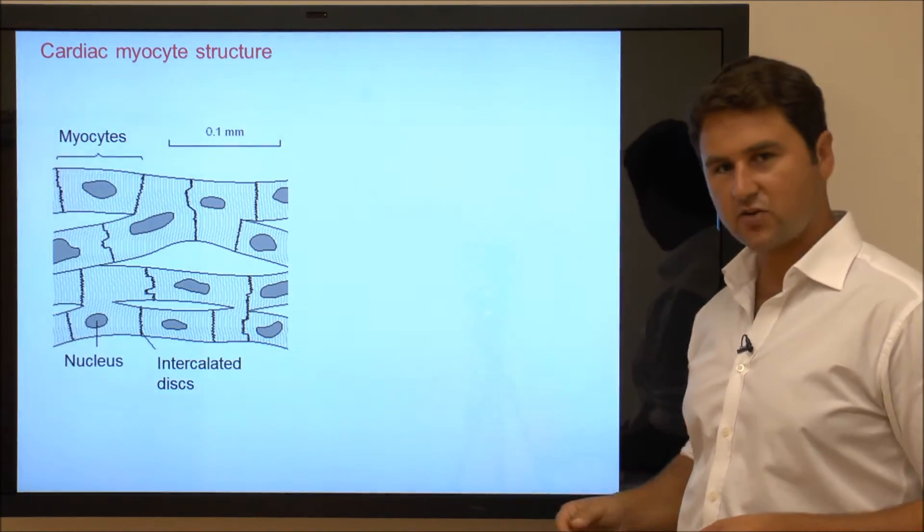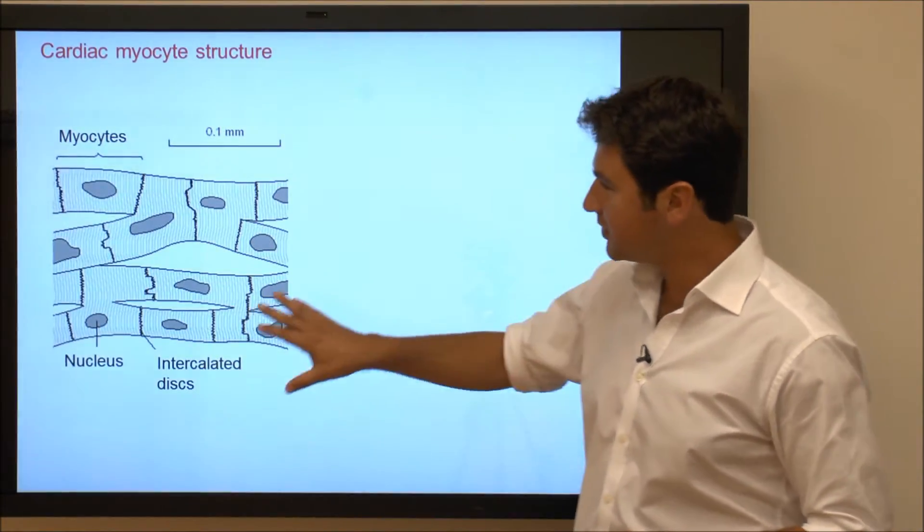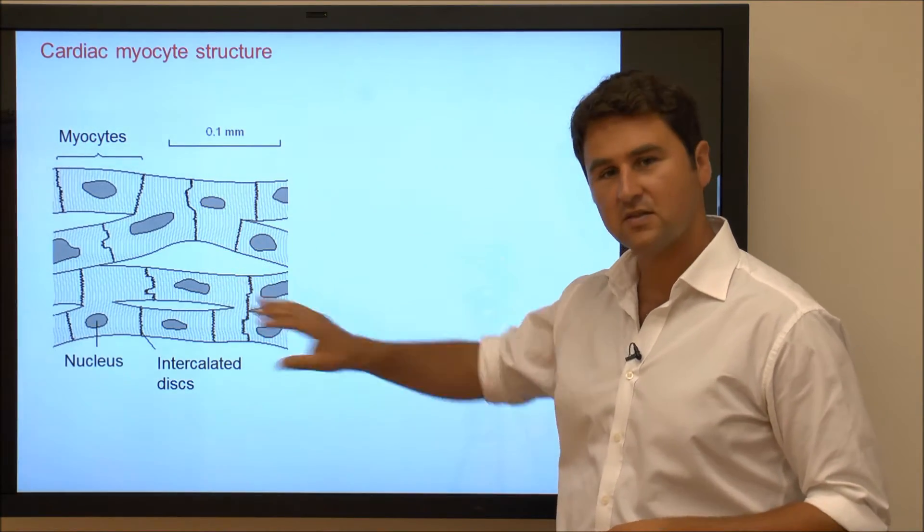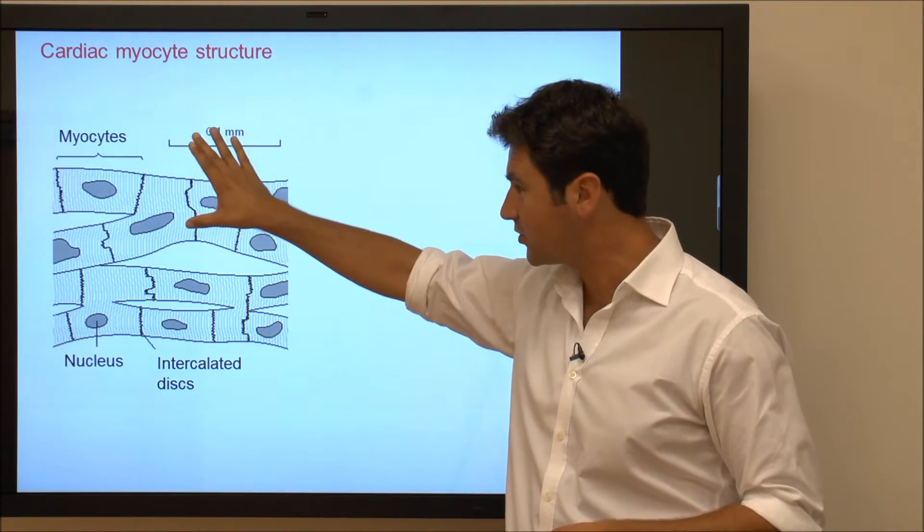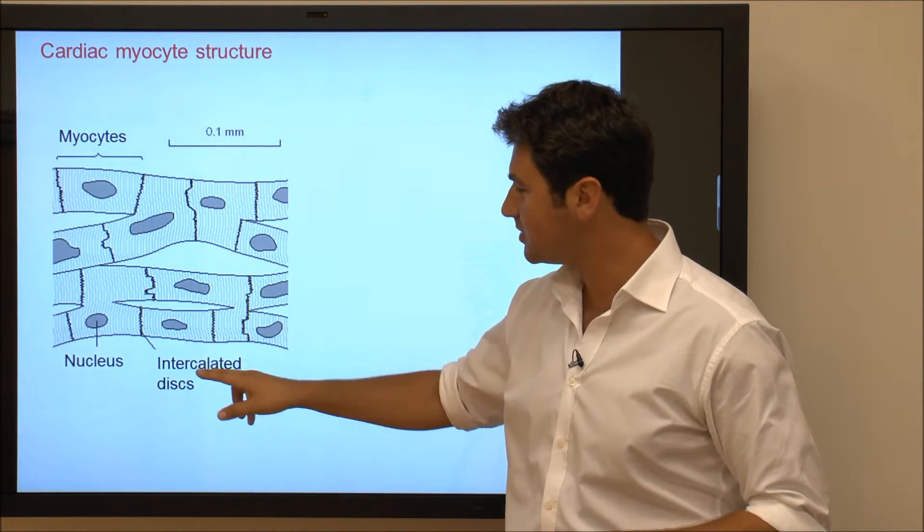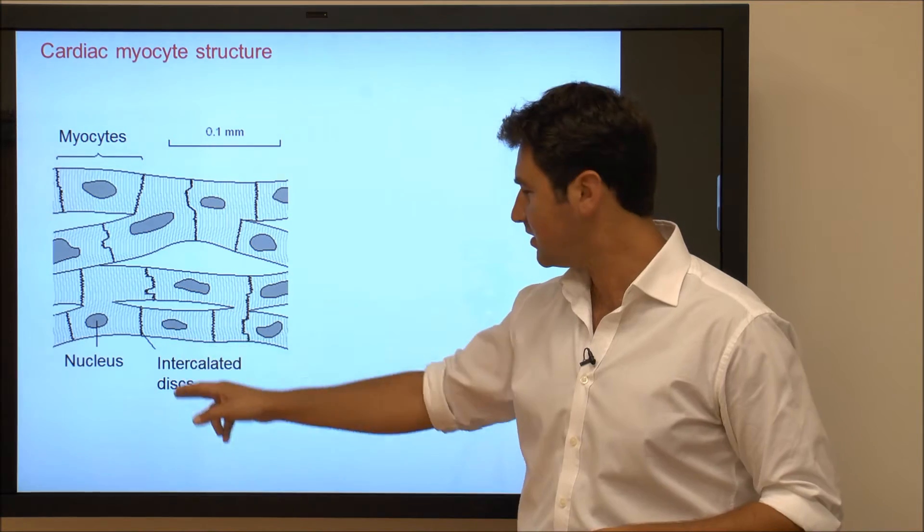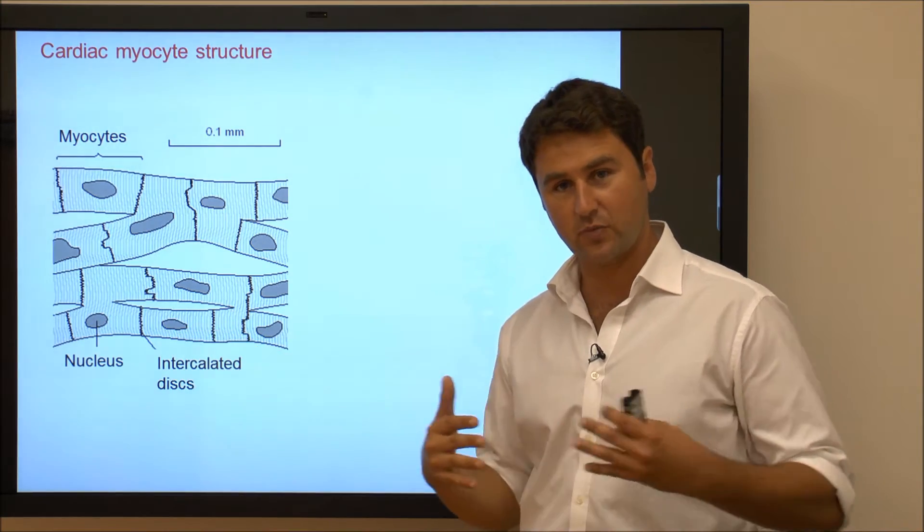So if we were to take a cross-section through the heart, what we would find is the majority of cells present in the heart are cardiac myocytes, which are these brick-like structures which have a single nucleus and they're separated by intercalated discs or gap junctions through which they communicate.